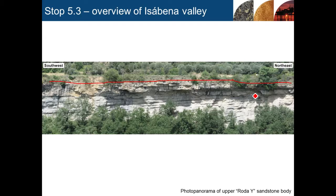What I want you to do here is look at the attitude of the beds in the lower two thirds of the exposure of the Rhoda Y sandstone body. Look at the geometry of those beds relative to the red line I have drawn at the top of the Rhoda Y sandstone body. If you can make some observations there and, time permits, make a quick sketch, and then we will discuss those as a group.